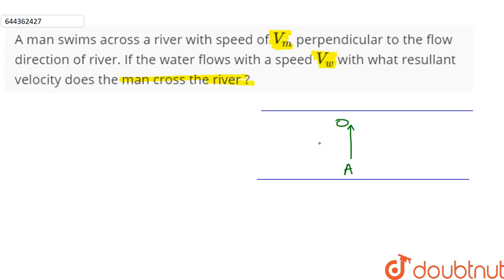And this is our velocity vector vm, and the river flows with a speed vw. So this is vw vector, let's call it OB.